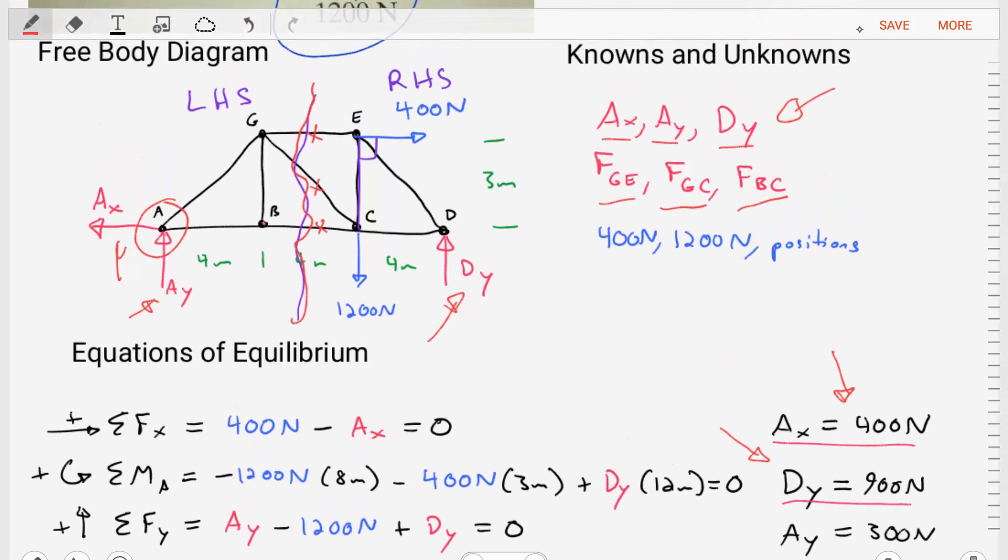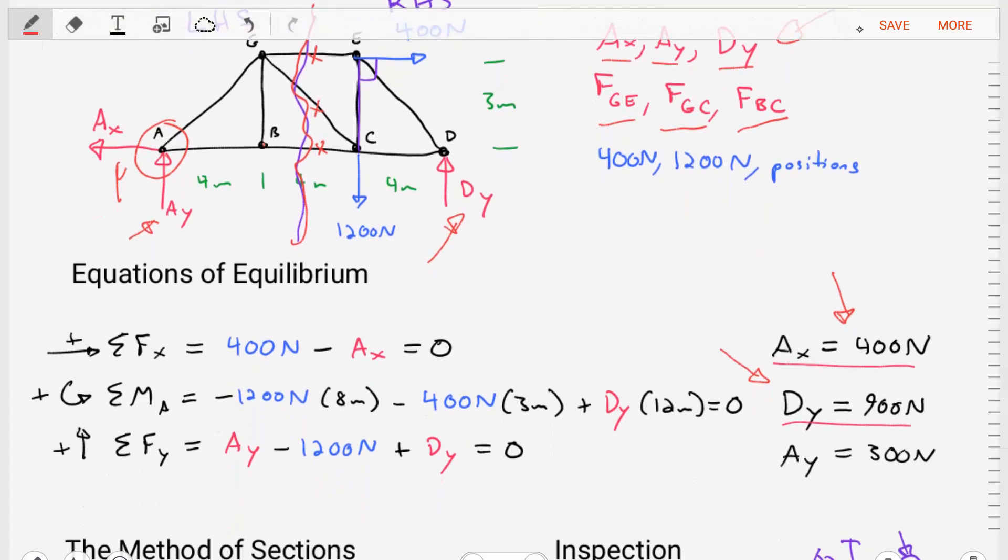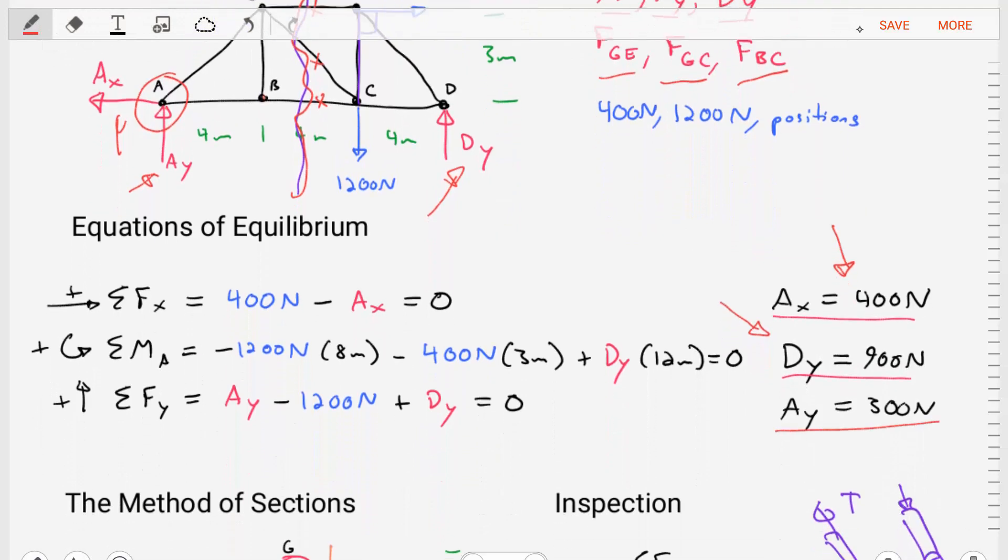And then we can also do the sum of the forces in the Y direction. And that'll, once we rearrange, provide us with a value of AY, which is equal to 300 Newtons.